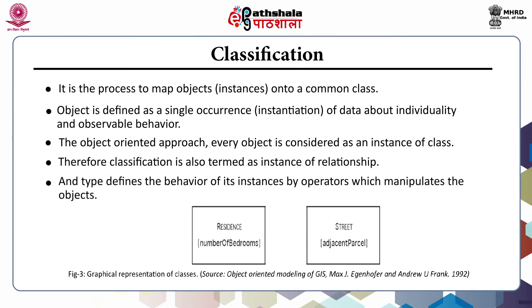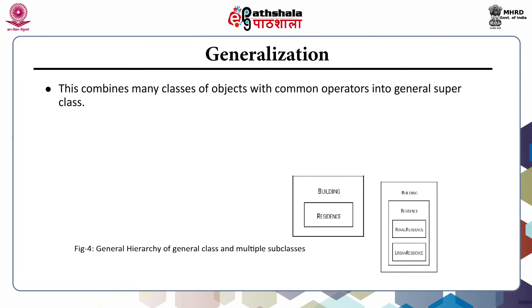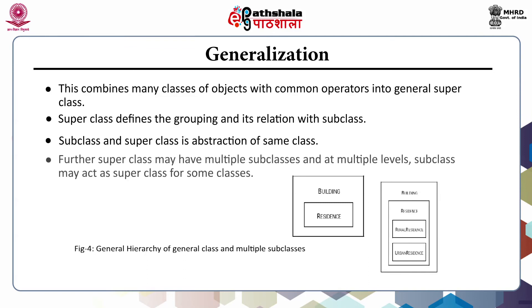A type defines the behavior of its instances by operators which manipulate the objects. In the right panel, we can see a graphical representation of classes. The next abstraction is generalization. This combines many classes of objects with common operators into a general superclass. Superclass defines the grouping and its relation with subclass. Subclass and superclass are abstractions of the same class. Furthermore, a superclass may have multiple subclasses at multiple levels, and a subclass may act as a superclass for some classes.